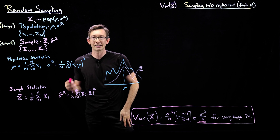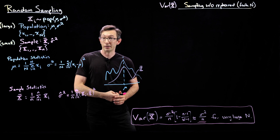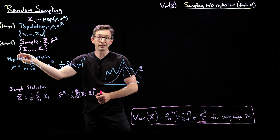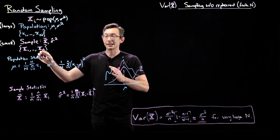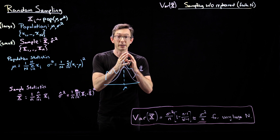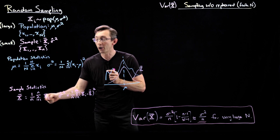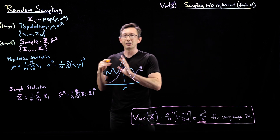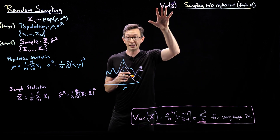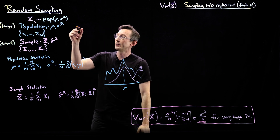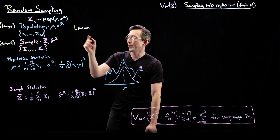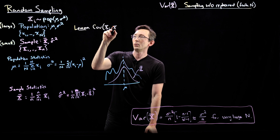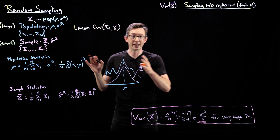That's only true if each of these Xᵢ's are independent variables. But for a small population, every time I pull one sample — every time I measure one of these members of the population — my population actually gets smaller for the next sample, and then smaller for the next, and so on. That introduces a small covariance between the elements of this random sample Xᵢ. So I'm going to write down a little lemma that is going to be important when we write down this expanded, more correct version of this variance formula.